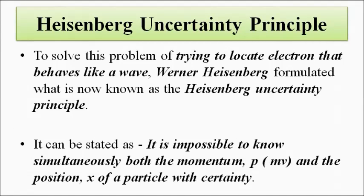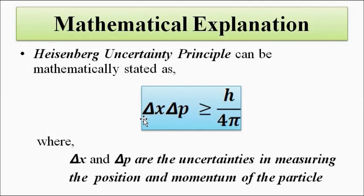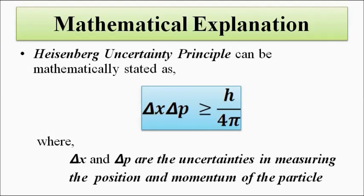The mathematical expression for the Heisenberg uncertainty principle can be stated as: the product of the uncertainties in measurement of position and momentum, when multiplied together, will always be greater than h by 4π, where h is Planck's constant and π is the mathematical pi. So delta x times delta p is always greater than h by 4π, where delta x is the uncertainty in position and delta p is the uncertainty in momentum.